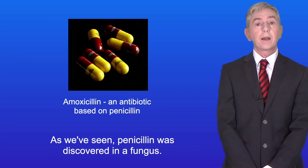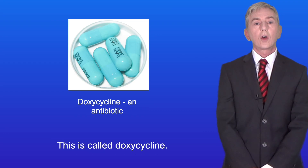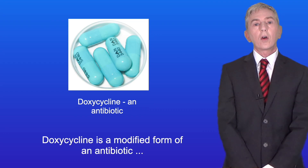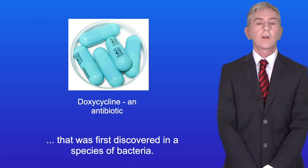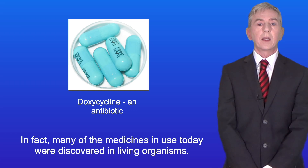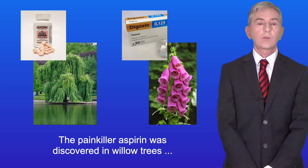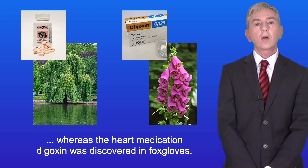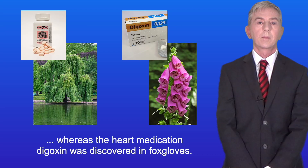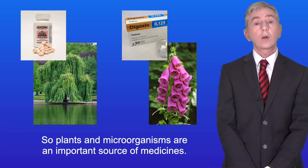So as we've seen, penicillin was discovered in a fungus. Here's another antibiotic called doxycycline, which is a modified form of an antibiotic first discovered in a species of bacteria. In fact, many of the medicines in use today were discovered in living organisms. The painkiller aspirin was discovered in willow trees, whereas the heart medication digoxin was discovered in foxgloves. So plants and microorganisms are an important source of medicine.